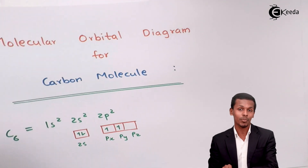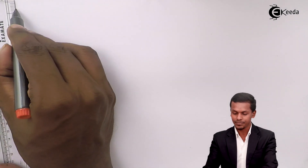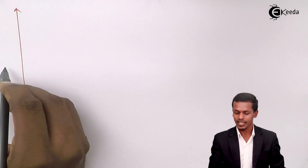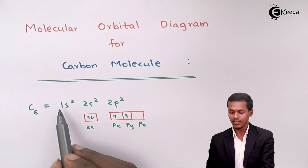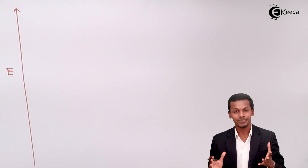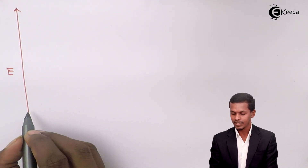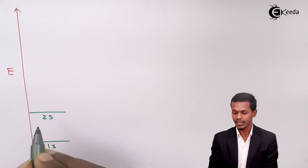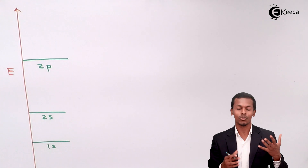Now let us represent the molecular orbital diagram for the carbon molecule, C2. This is the energy level I am representing. It consists of three subshells: the 1s orbital at the bottom, then the 2s orbital, and at the top the 2p subshell, which has three orbitals in it.